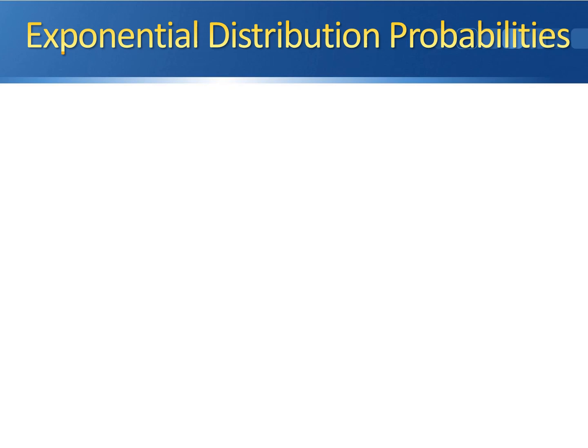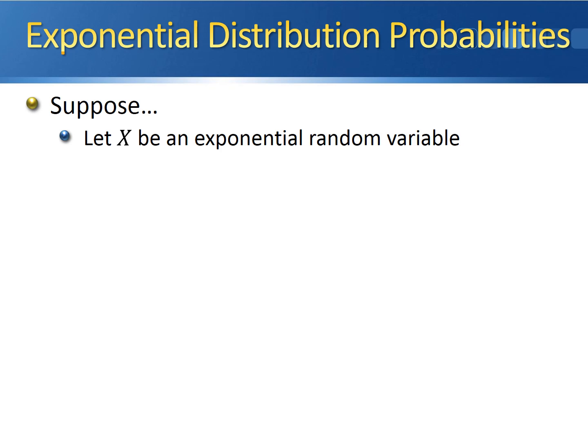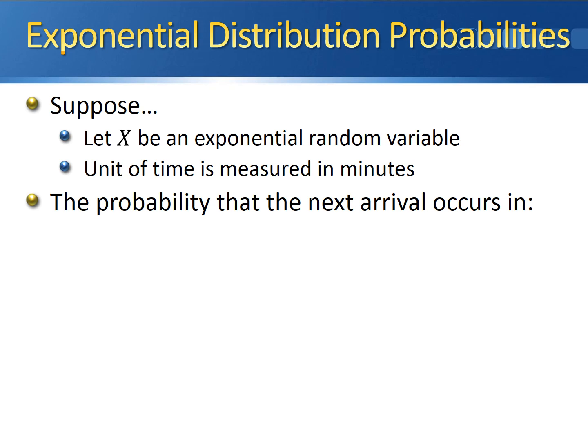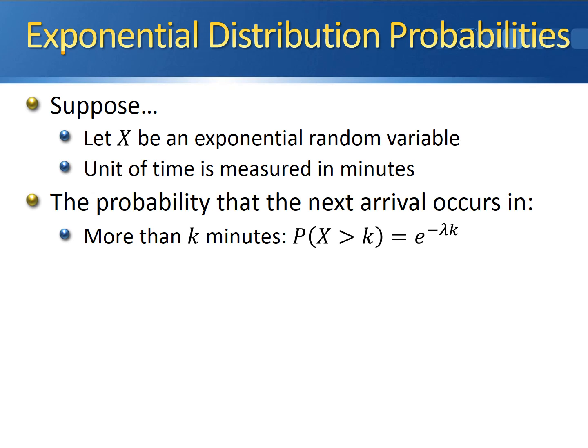Calculating exponential distribution probabilities requires a different equation depending on the situation. Let x be an exponential random variable measured in minutes, though you can use any unit of time. The probability that the next arrival occurs in more than k minutes is e to the negative lambda times k.